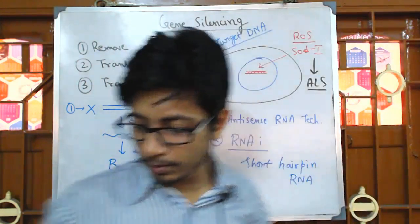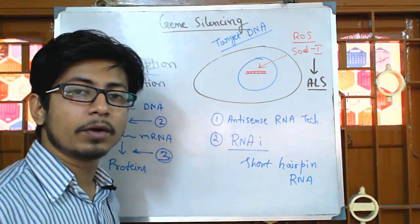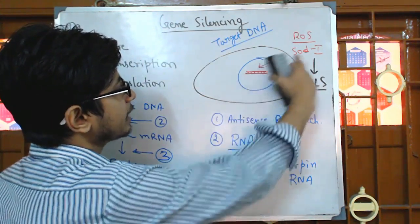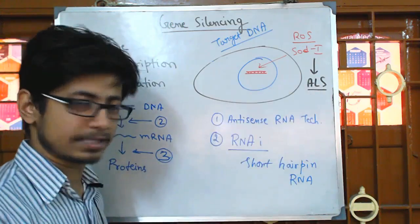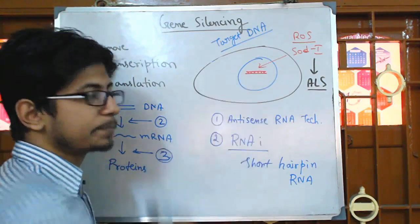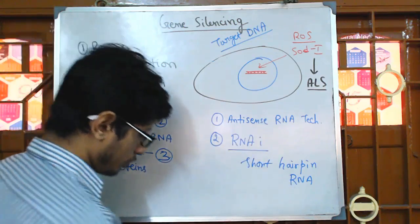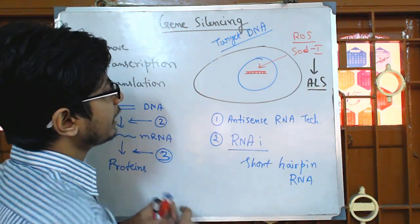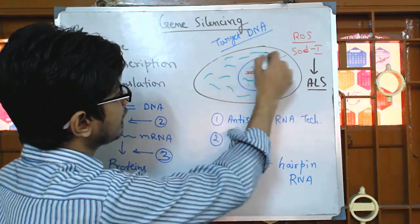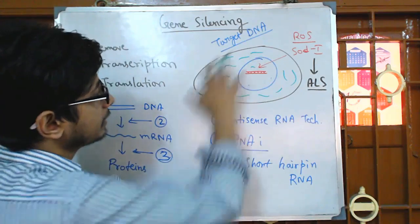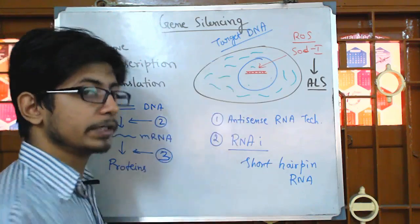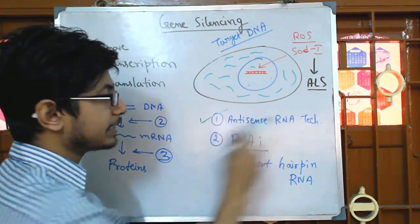We know that degradation of genes is required for prevention of certain diseases. The SOD1 gene, which is mutated and causes ALS, is our example. To prevent that, we want to degrade all expression of this gene, because if this gene is expressed and proteins are made, it can cause ALS. We need to degrade those mRNAs so they cannot be translated further.